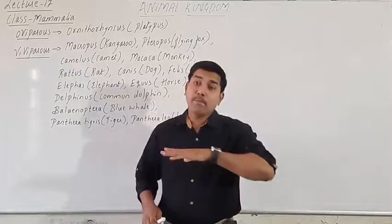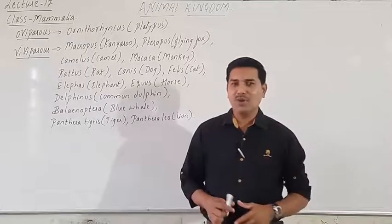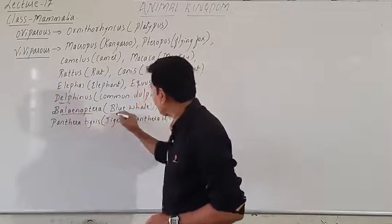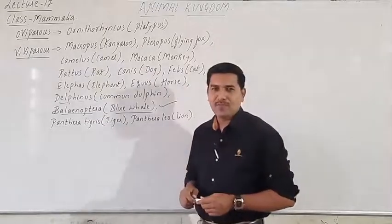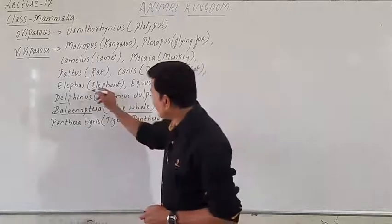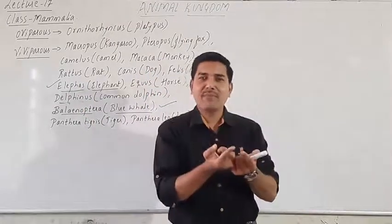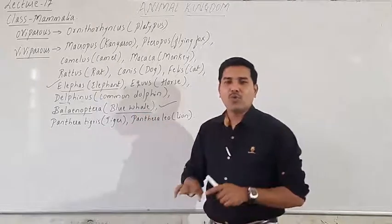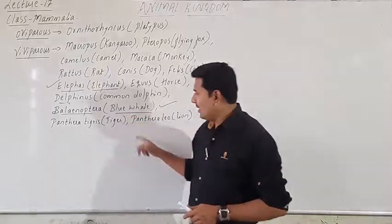Out of these, which is the biggest animal in the world? Balaenoptera, commonly called the blue whale, is the biggest and largest mammal in the world. The biggest mammal on land — in the terrestrial medium — is the elephant. The biggest mammal in the aquatic medium is also Balaenoptera, the blue whale.